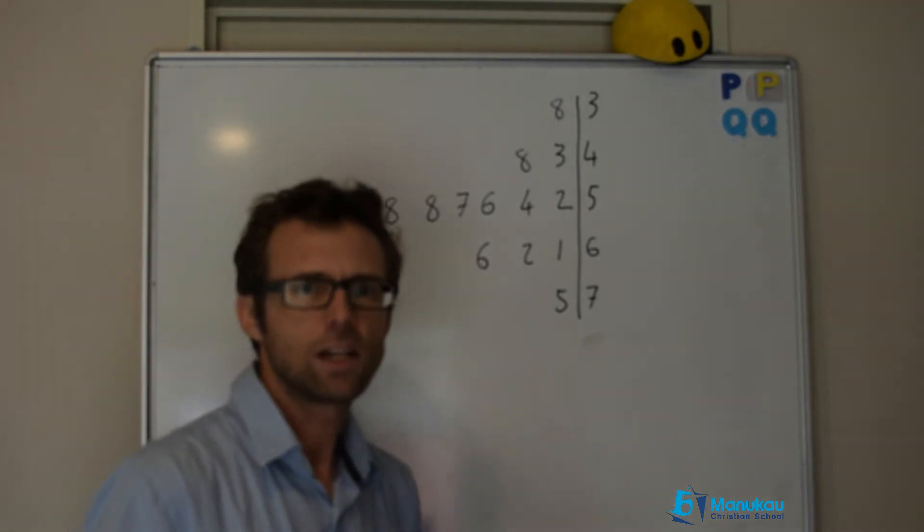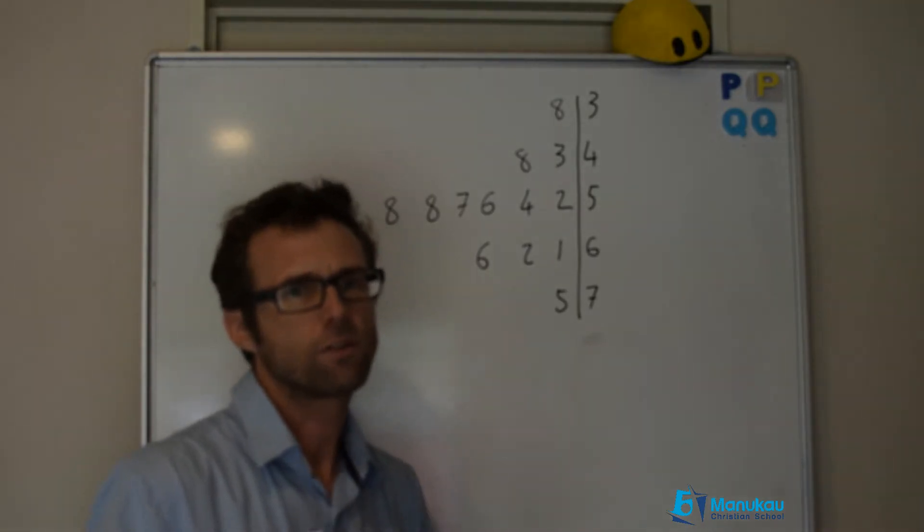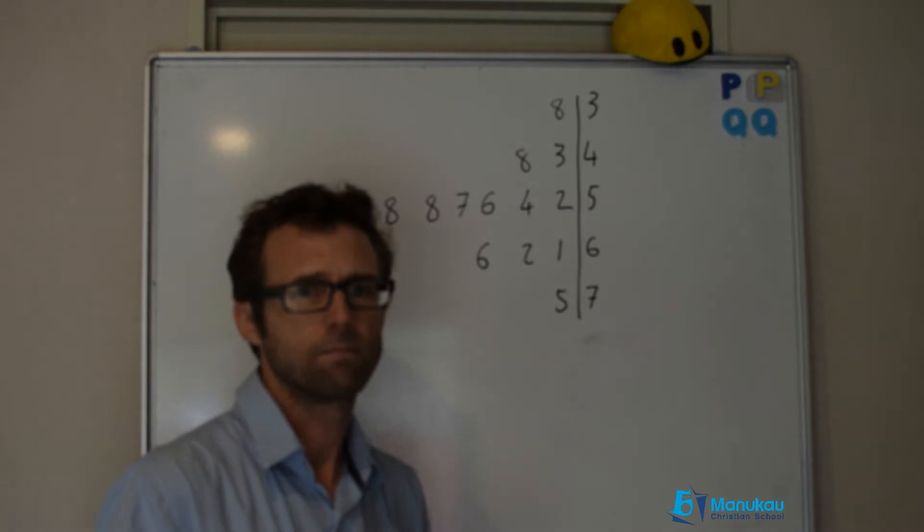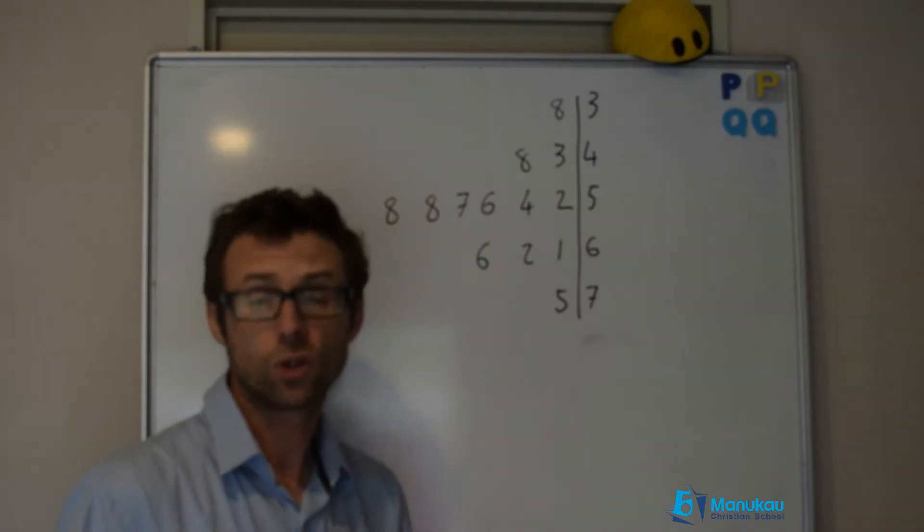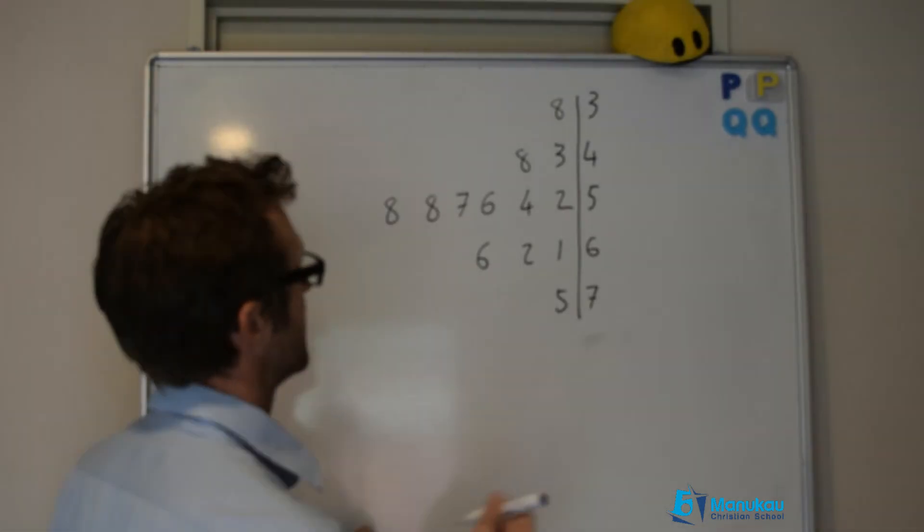Since there are 13 items of data, your first step is to find the median. I know it doesn't say that, but you do want to find the median. So we go 13 divided by 2, which is 6.5, so we're looking at our seventh item of data.